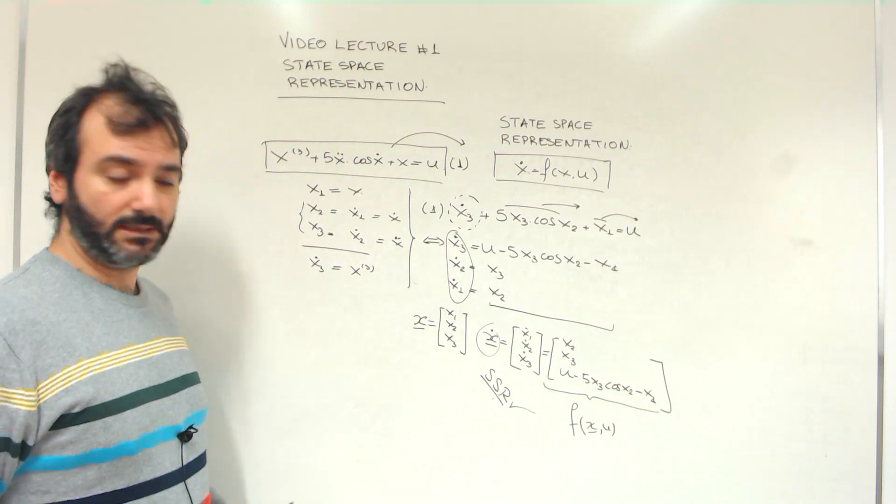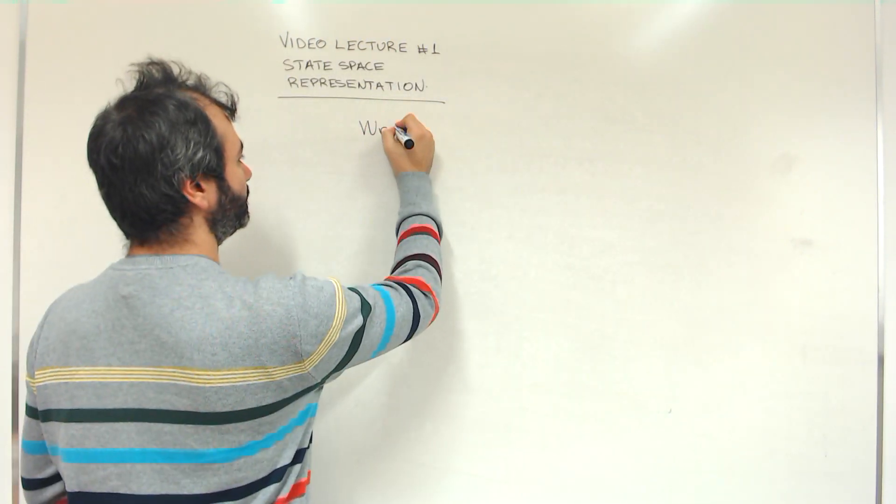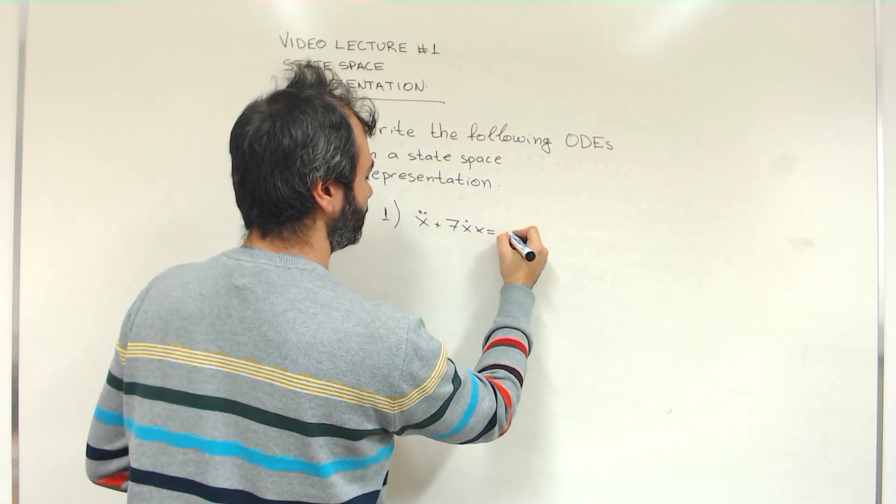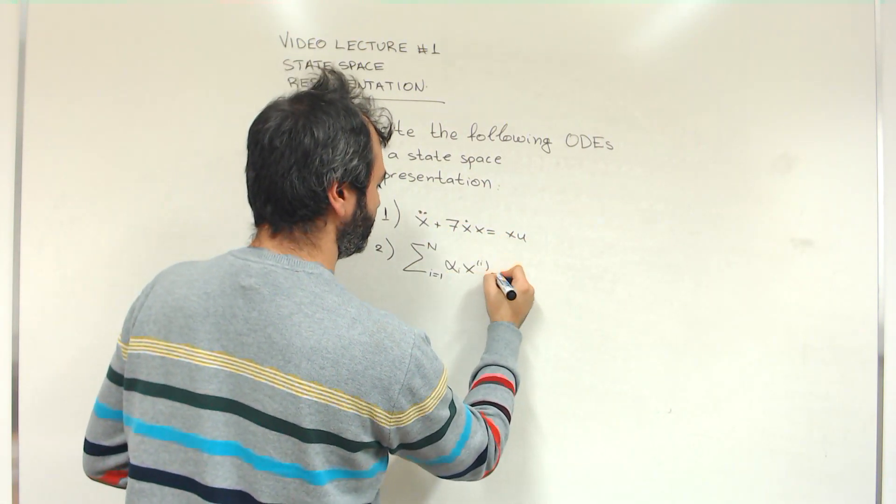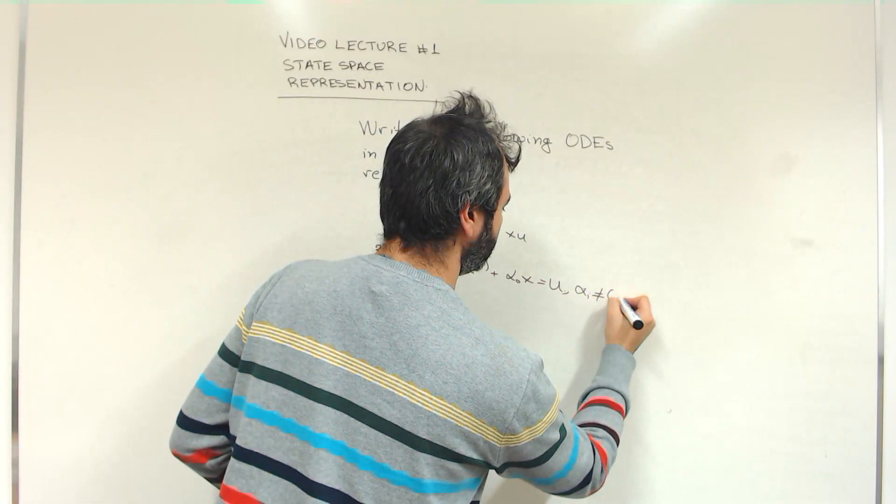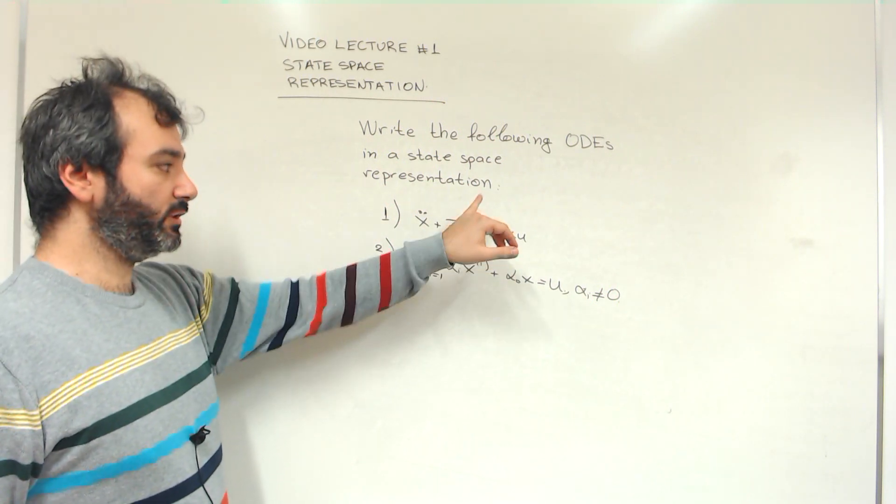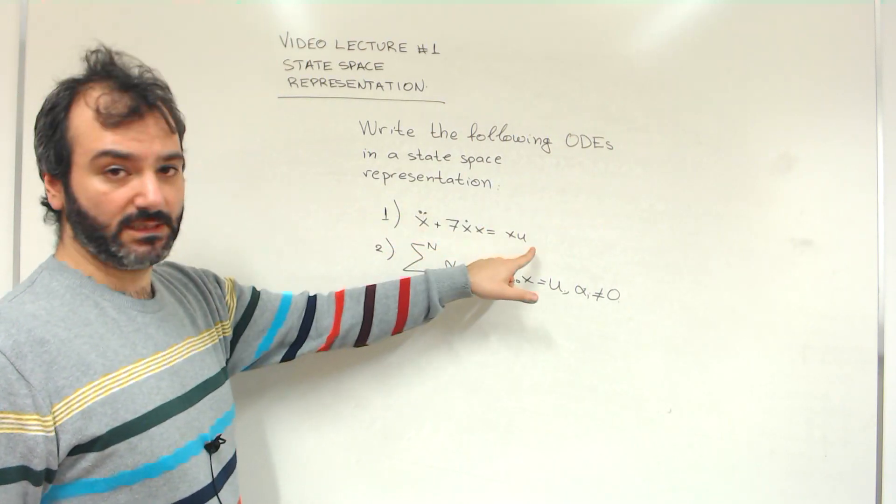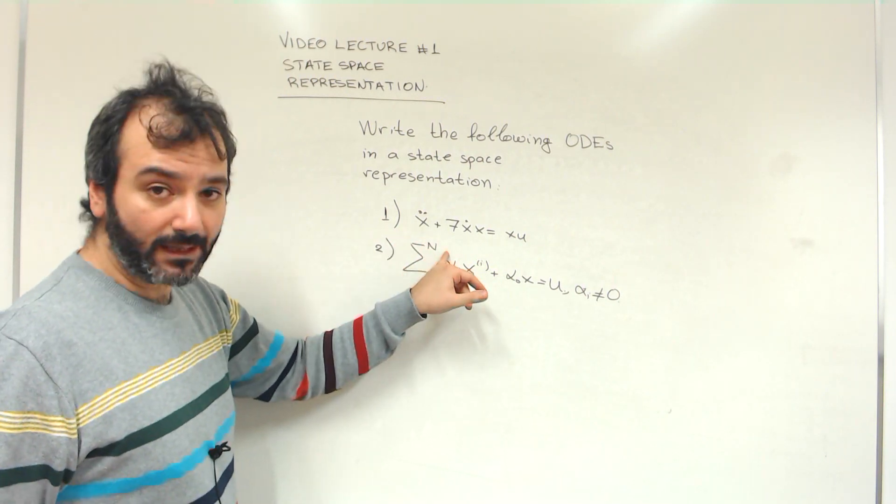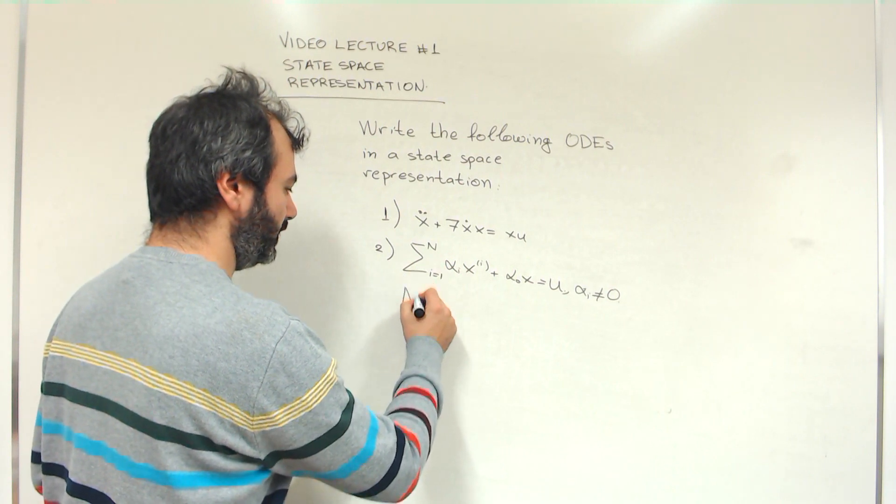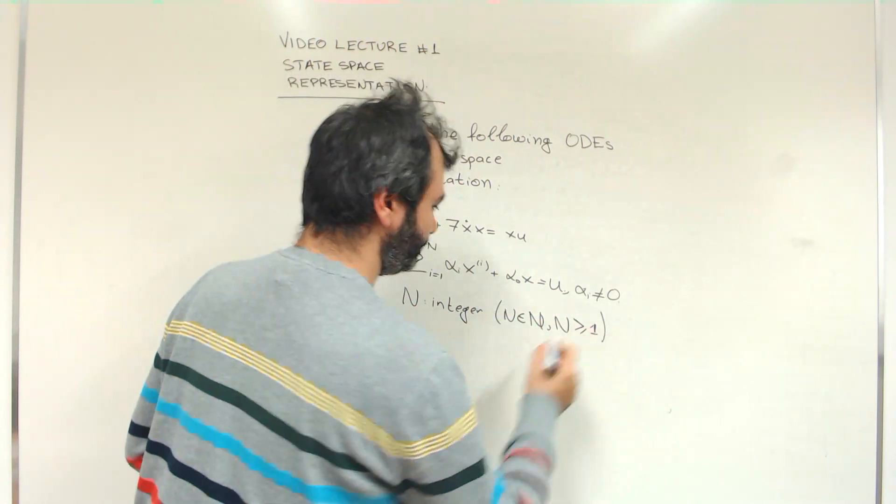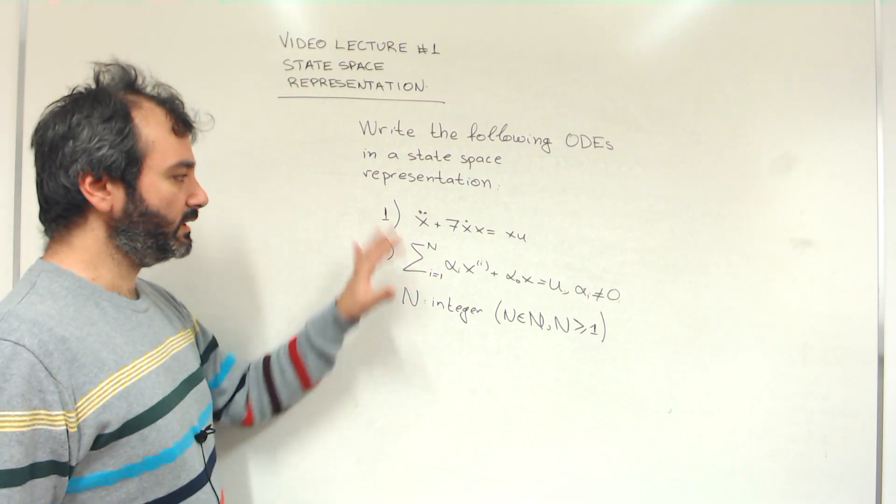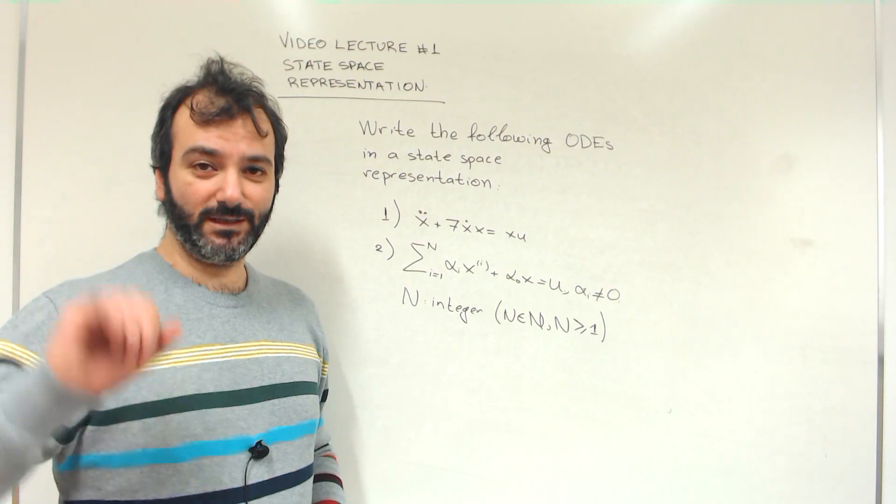Great! So now you can do the following as an exercise to practice. The first one is a second-order ordinary differential equation, this is what ODE stands for: x double dot plus 7 x dot x equals x u. And the second one is an nth order, where n is an integer, and alpha i are constant coefficients which are not equal to zero. So these two are homework, and thank you very much for watching. Until next time, goodbye.